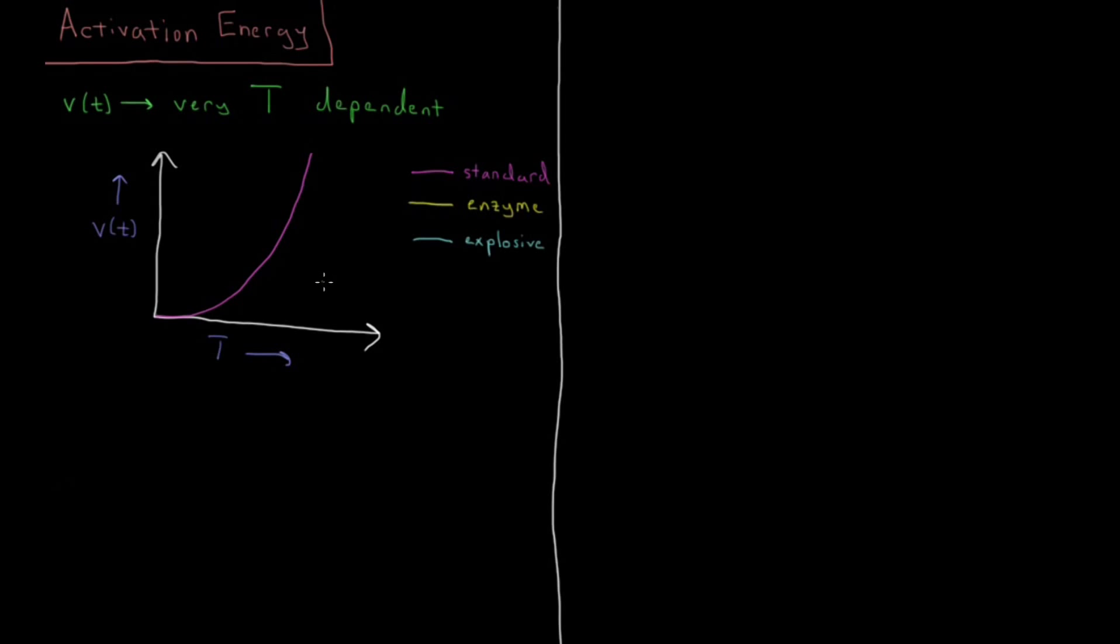Then there are other types of reactions where maybe you have some type of enzyme catalysis and that enzyme starts functioning at a certain temperature and then the reaction gets faster and faster. And then you get to some temperature and you start denaturing the enzyme, and then at some temperature the enzyme completely unfolds and your reaction rate just collapses. So that can happen as well, this type of a temperature dependence profile.